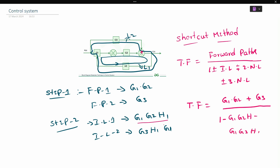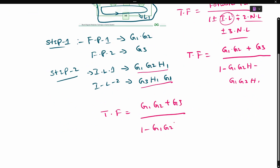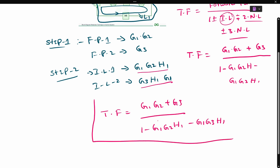In the denominator, we have H1 from individual loop 1 and individual loop 2. Since there are no non-touching loops and no three non-touching loops, the final transfer function is: (G1·G2 + G3) divided by (1 minus G1·G2·H1 minus G1·G3·H1). This is the final transfer function for this block diagram.